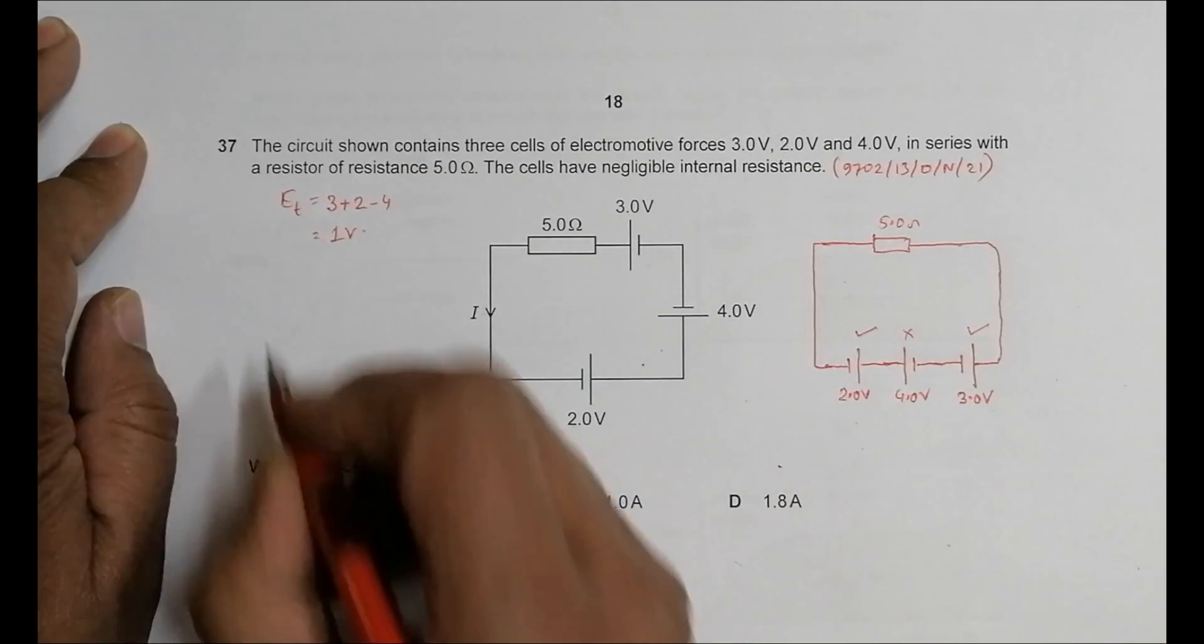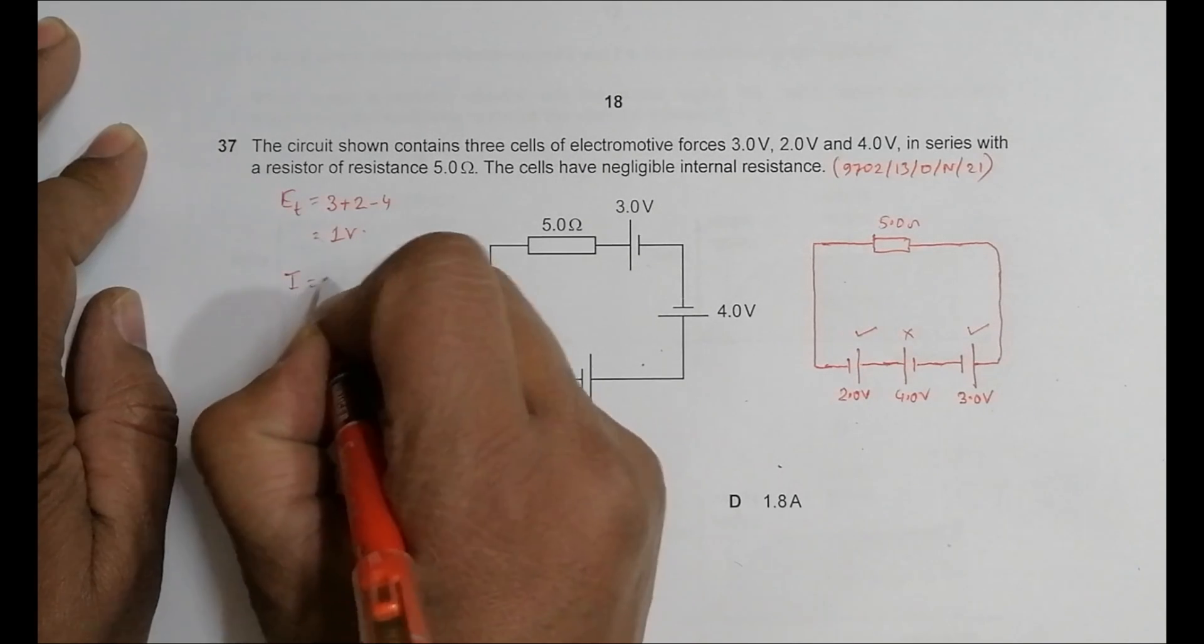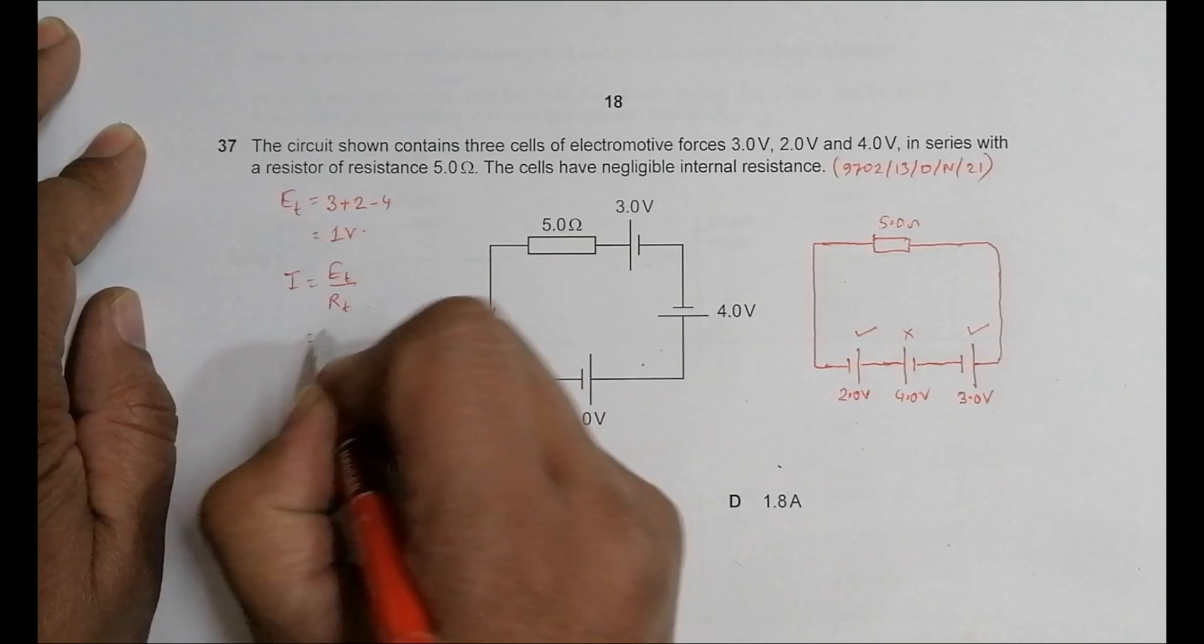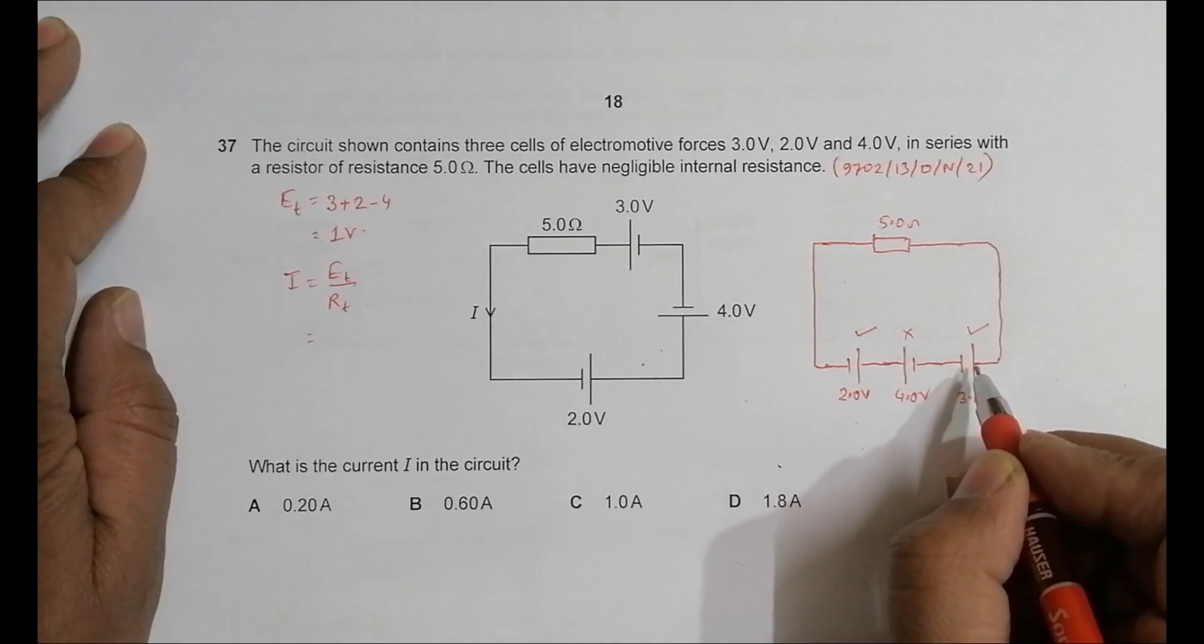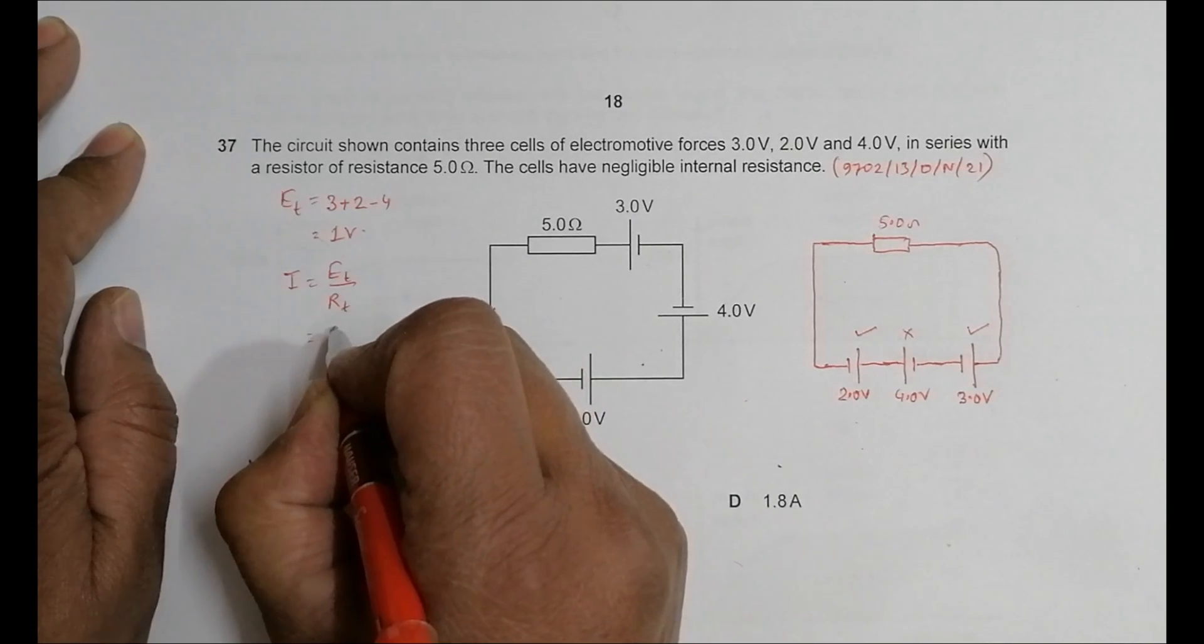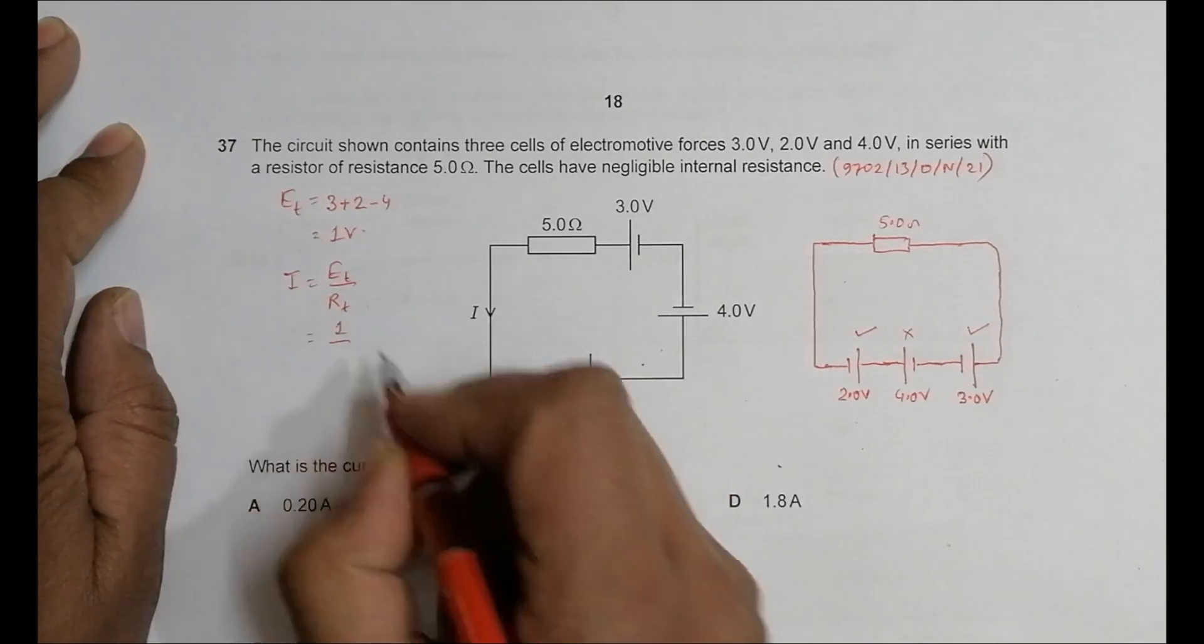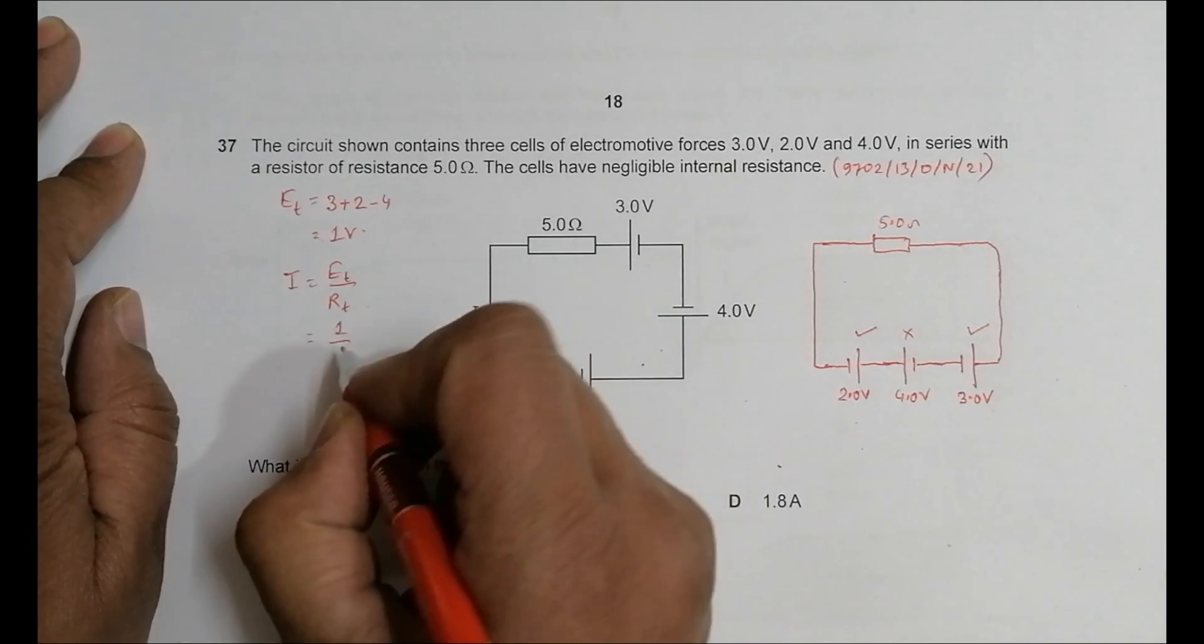Now the current will be equal to E_total divided by R_total. R is only one there - they're neglecting the internal resistance, so this is only R. So E_total is 1 and R_total is 5.0.